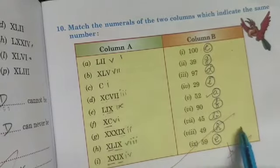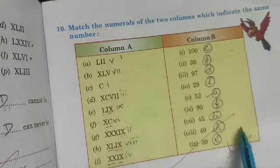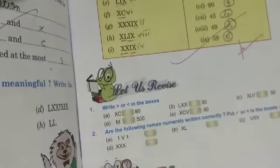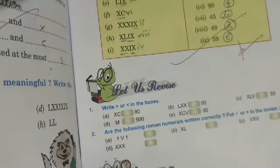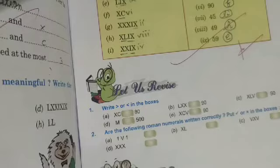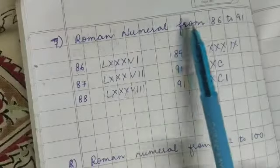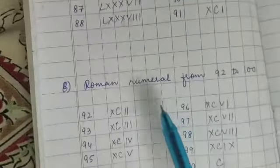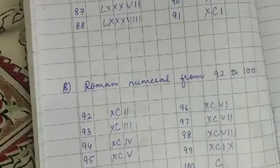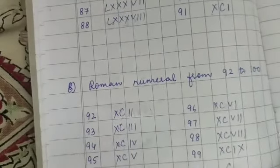So here they have, let us revise. I think you have already solved, so just revise it again. Clear? And here this is question number seven and eight. I have written the counting Roman numerals from 86 to 91, Roman numerals 92 to 100. So children, just revise it again clearly, okay?